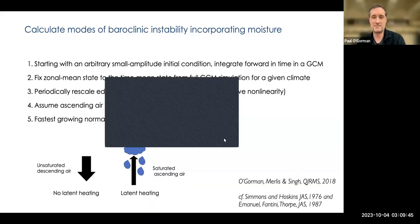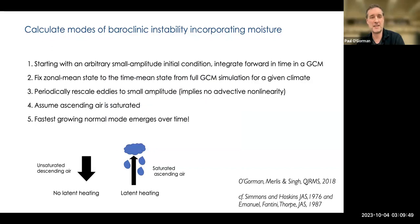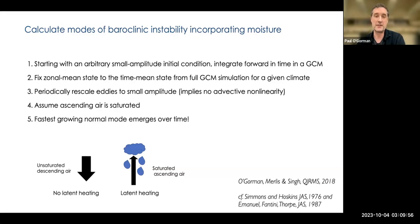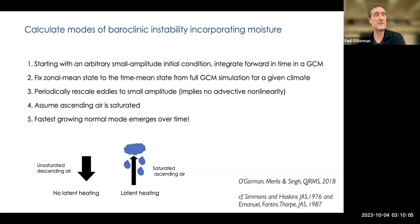We initialize and integrate forward in time in the GCM. We fix the zonal mean state to be the time-mean state from the full GCM simulation for a given climate, and then we periodically rescale the eddies so they remain at small amplitude. This is to remove the nonlinearity associated with advection.